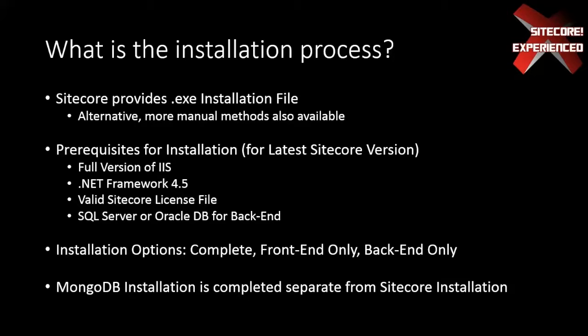So what do I have to do to get Sitecore on a machine? Sitecore provides an .exe installation file — basically a wizard that walks you through it. That's my preferred method. Other implementation partners go for more manual means, and the Sitecore Instance Manager module is also out there. The manual method involves a zip file where you can put files in directories yourself, then create your own app pool and IIS website. The .exe works, it's quick and easy.